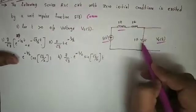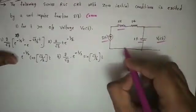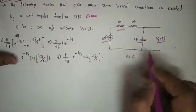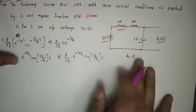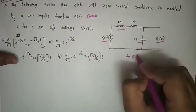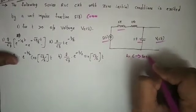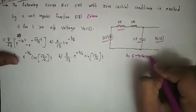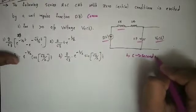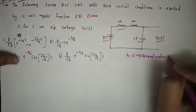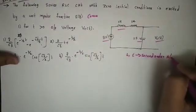There are two storage elements: an inductor and a capacitor. Two storage elements means this is a second order network. This second order network is the first example we work through.